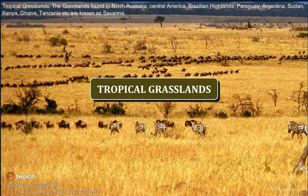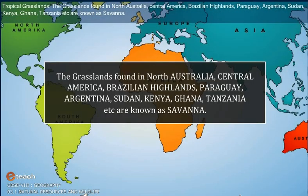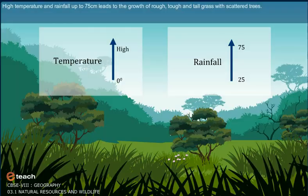Tropical Grasslands. The grasslands found in Northern Australia, Central America, Brazilian highlands, Paraguay, Argentina, Sudan, Kenya, Ghana, Tanzania etc. are known as savannah. High temperature and rainfall up to 75 cm leads to the growth of rough, tough and tall grass with scattered trees.